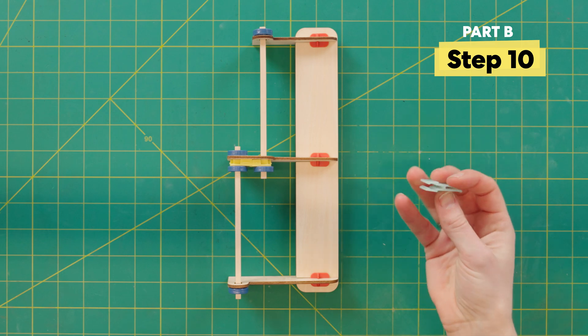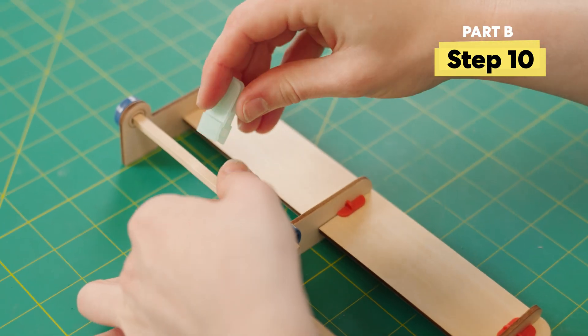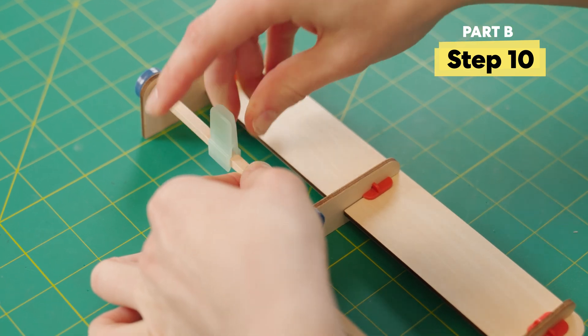Okay, next we're going to get these little blue clips. Notice that one side of the clip is a little bigger and has these teeth. Push the bigger end of the clip onto the middle of one of the wood dowels.